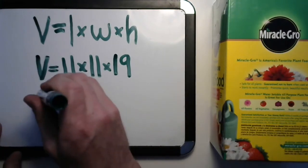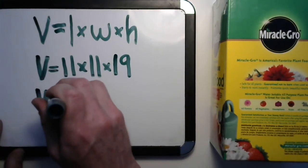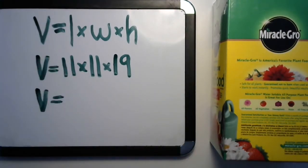So we can see that volume equals length times width times height. The length, width, and height of this box are 11, 11, and 19 centimeters. If you wouldn't mind multiplying that and giving me the answer, I'll give you just a moment to do that.